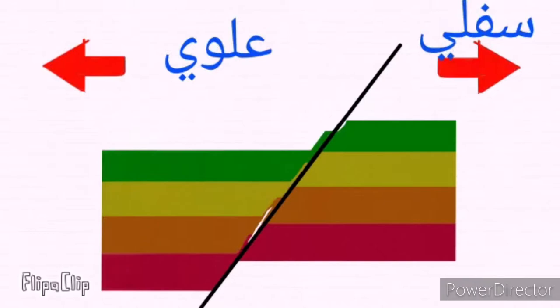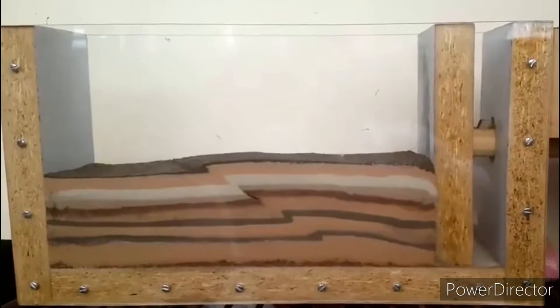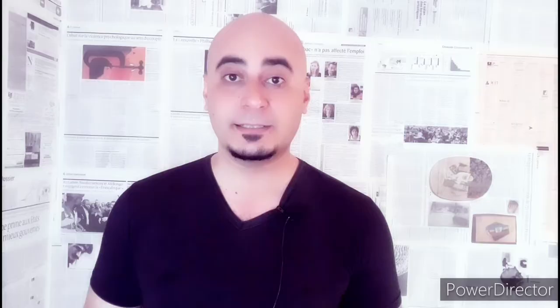If the hanging wall moves downward, we will call it a normal fault. In normal faults, the hanging wall moves downward because of the effect of tension forces.